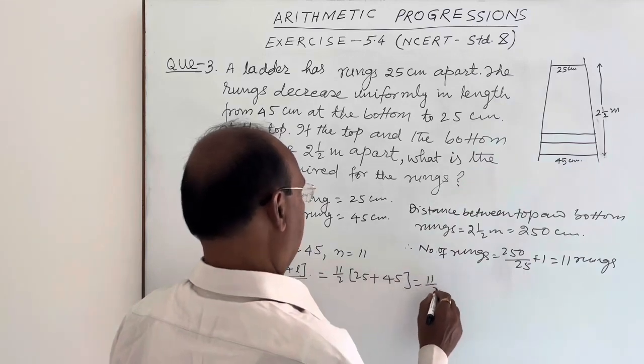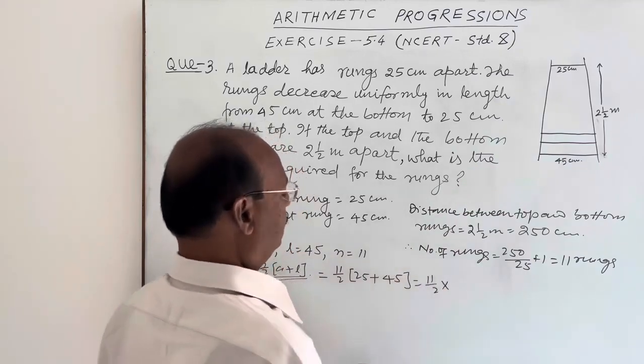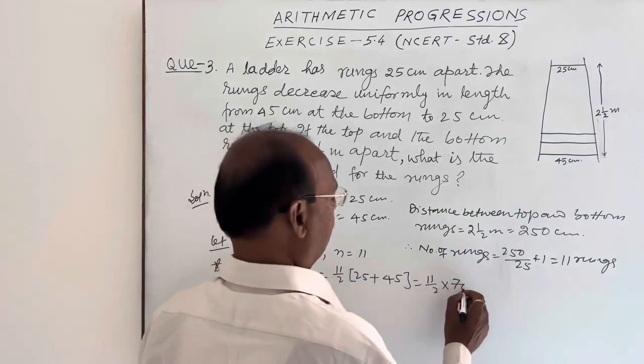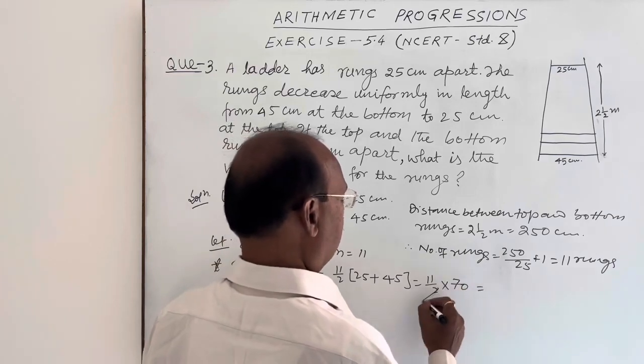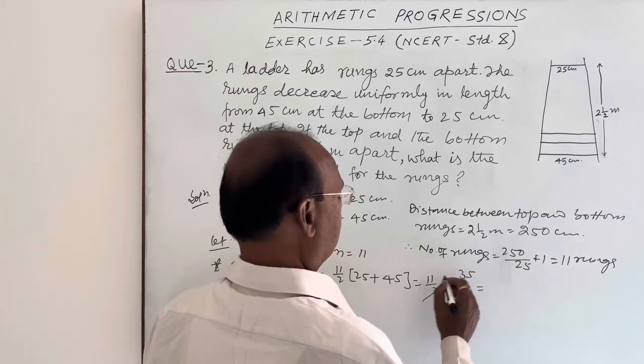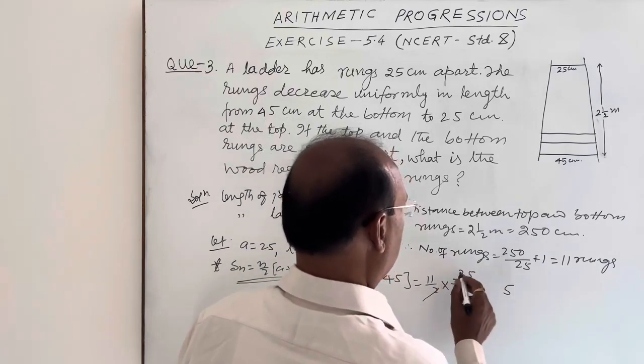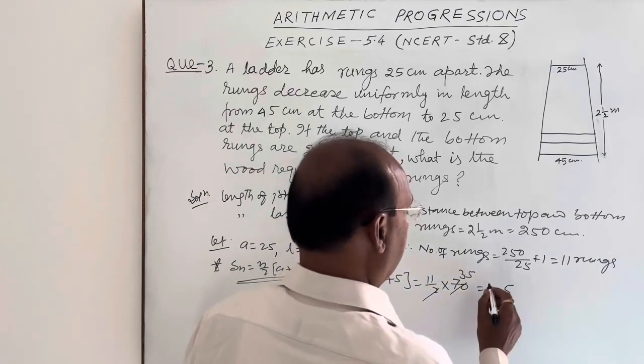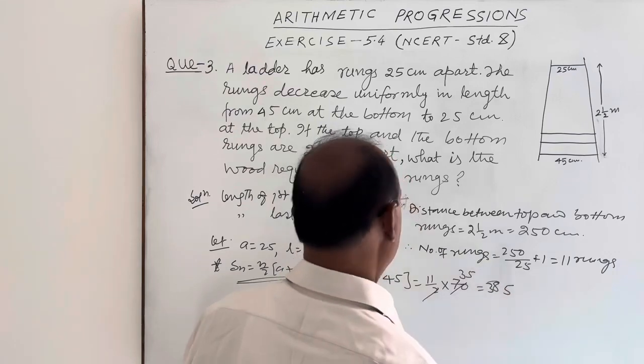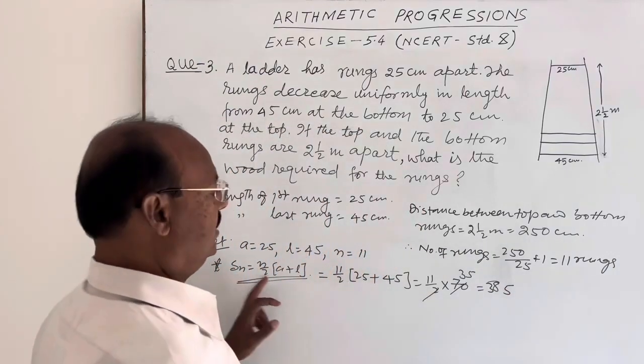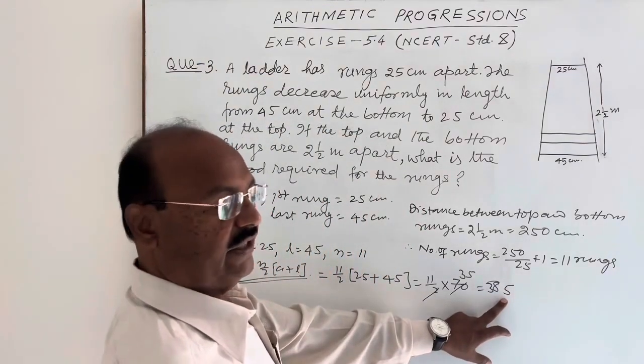And this is equal to 11 by 2 into 70. And this is equal to, this is 35. So 35 into 11 is 385. So value of Sn is 385.